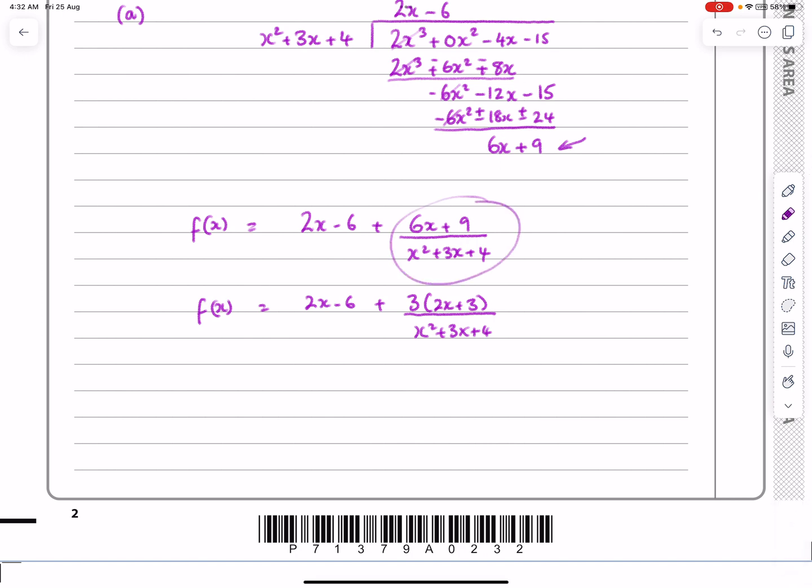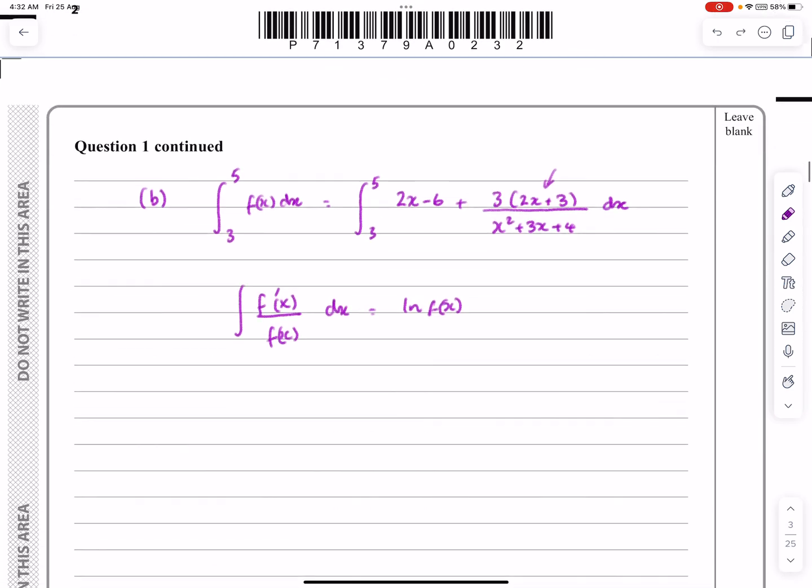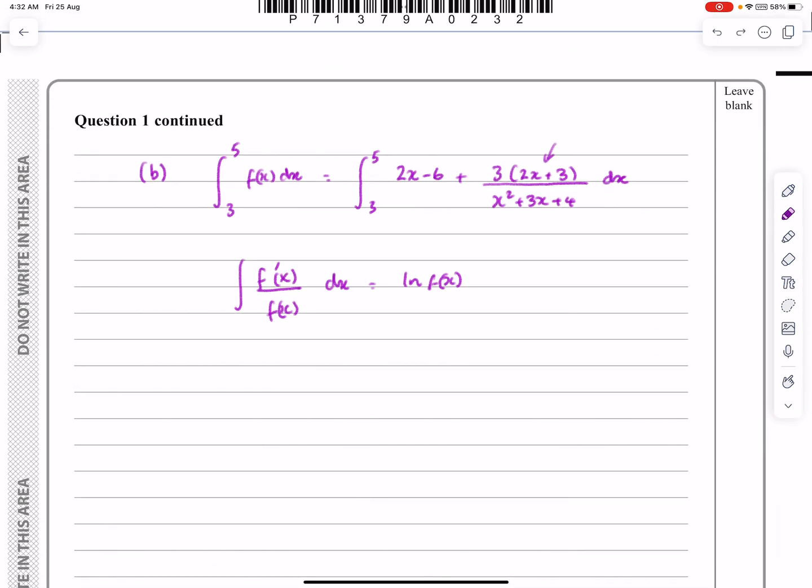They're trying to make things easier. If we'd left it as 6x plus 9, that's harder to see then that we've got f dash x over fx. But here, they've really laid it out on a plate for us. Yes, I do have it in the format f dash x over fx. I know I've got 3 in there, but that's no issue at all. That's just a multiple. So because of that, we can now go ahead and try and integrate this thing.